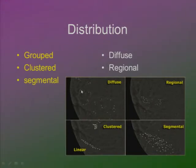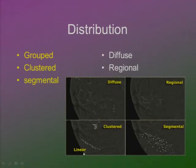Diffuse calcifications — spread away from each other, one here, one there — are probably benign. When they cover a region of the breast without following any anatomical structure, that's also probably benign. Clustered small groups are suspicious. Linear distribution following the track of a duct is suspicious. Segmental distribution following the whole anatomy of the lobe is again suspicious.